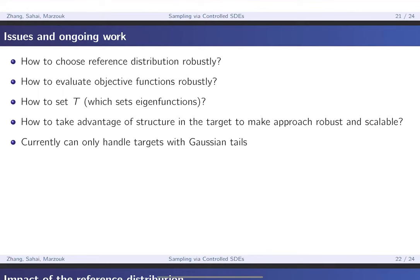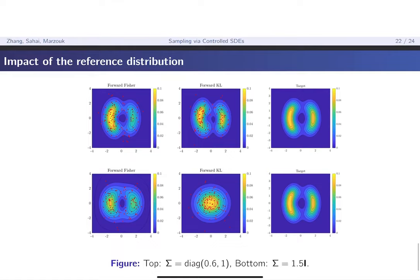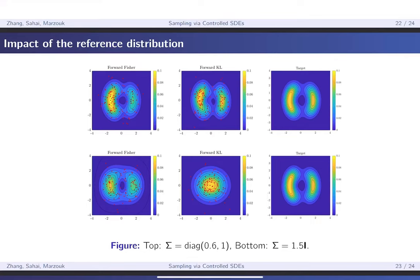One of the key open issues is the sensitivity to the reference distribution. In a 2D example, if you use the right reference distribution and apply Fisher or KL divergence, they both capture the two lobes of the target well. But if you modify the reference distribution by even a modest amount, you get a dramatically different result: with the Fisher divergence it fails to capture the shapes correctly, and with KL it doesn't move at all. This shows the method is relatively fragile — a modification to the reference distribution can really affect how well the method works.